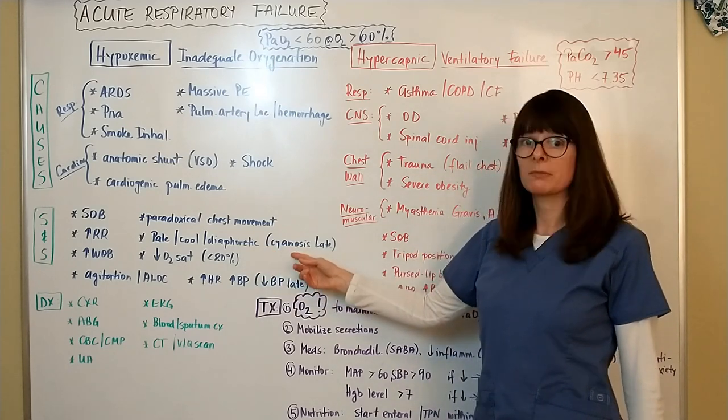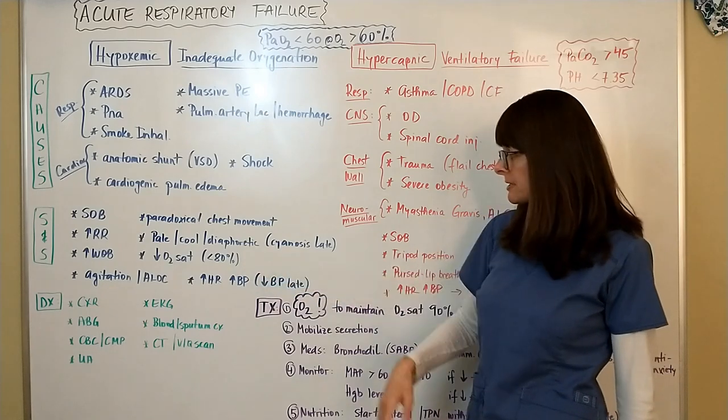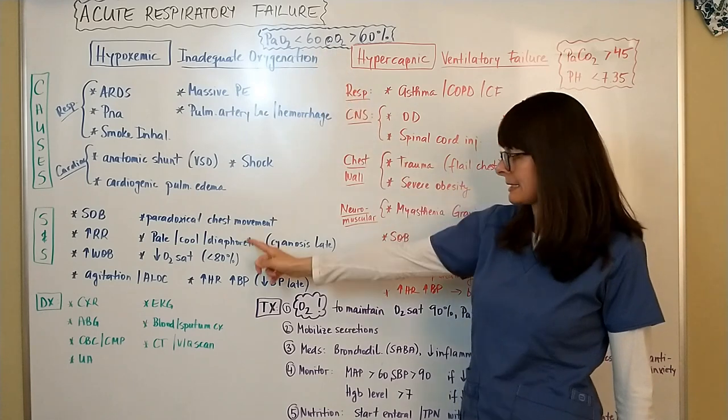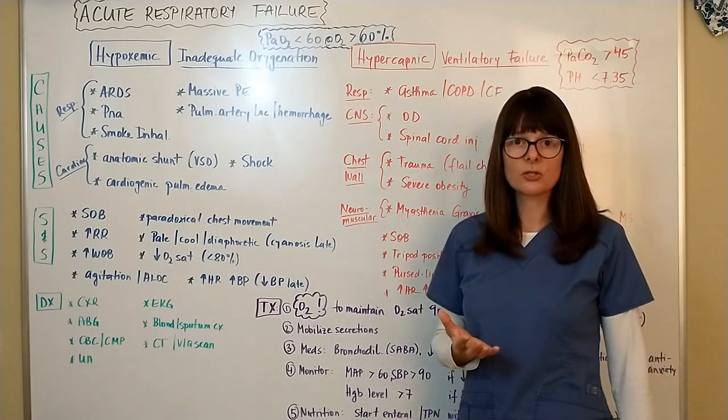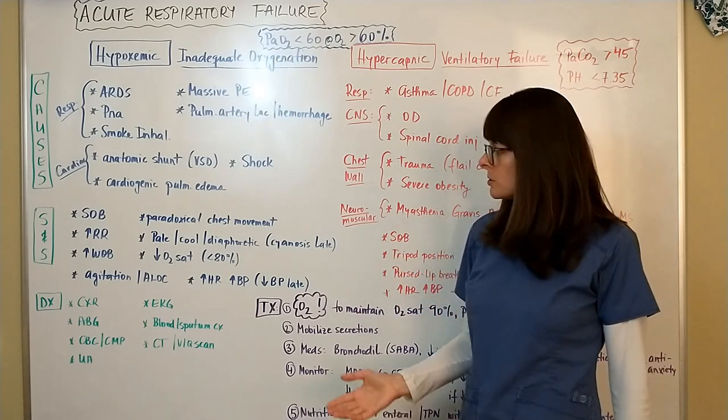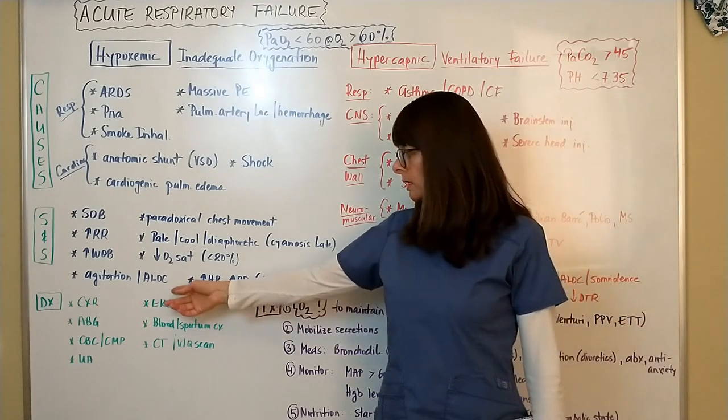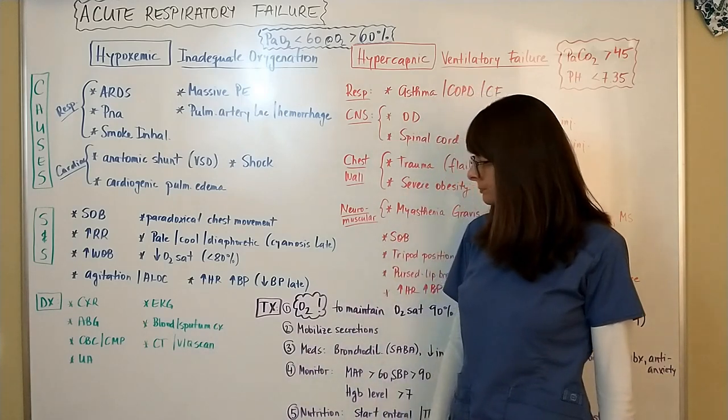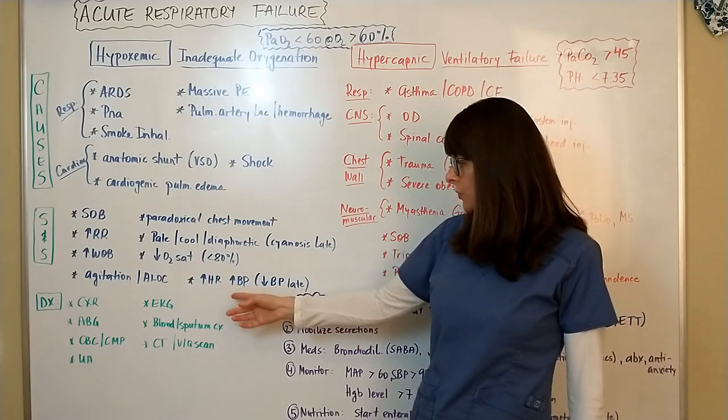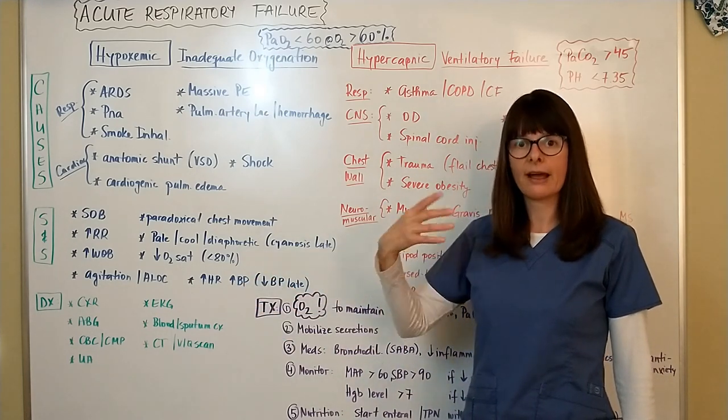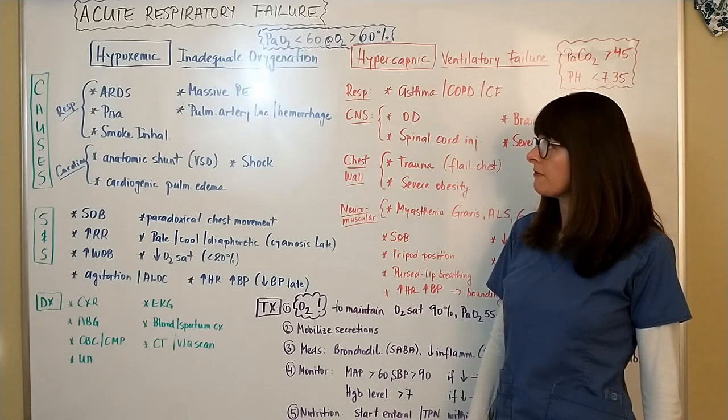Later on the patient can become cyanotic. Hopefully we'll detect something is going on with this patient when they're having these milder skin signs before they become cyanotic. The PaO2 is less than 60, which corresponds to about oxygen saturation of 80. When we don't get enough oxygen, we need to think about perfusion to the brain. Signs and symptoms will be agitation or altered level of consciousness because the brain is not being perfused. Eventually the patient might be combative because their brain is being hypoperfused. With this air hunger and inadequate oxygenation, the body's compensatory mechanism will be increased heart rate and blood pressure. But later on they might end up hypotensive, so cyanosis and hypotension are late signs of hypoxemic respiratory failure.